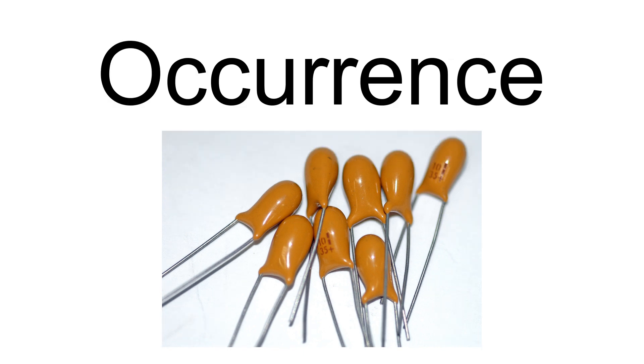Tantalum occurs in the minerals tantalite and columbite (columbium being an archaic name for niobium), which occur in pegmatites, an igneous rock formation. Tantalite was discovered by Anders Gustav Ekeberg at Ytterby, Sweden, and Kimito, Finland.